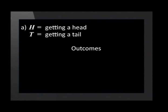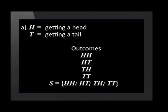There are four possible outcomes. You can get a head on the first toss and then a head on the second toss, or a head on the first toss and a tail on the second toss. It is also possible to get a tail on the first toss and a head on the second toss, or a tail on the first toss and a tail on the second toss. So the sample space S equals {HH, HT, TH, TT}.